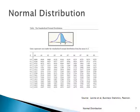Remember: the columns run 0.00, 0.01, 0.02, up to 0.09 — that's your second decimal place. So for 0 to 1.35, you go to the 1.3 row and the 0.05 column, and the area is 0.4115.